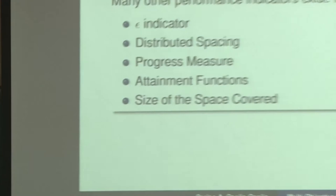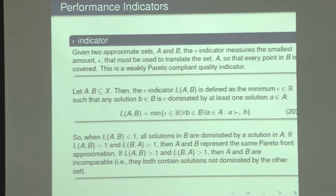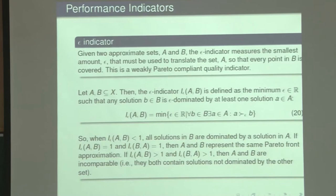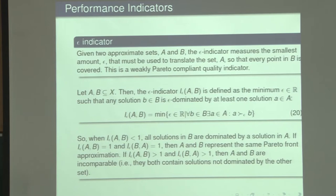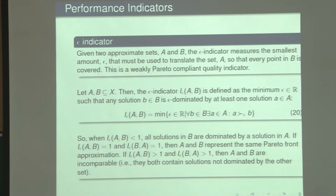The epsilon indicator measures the smallest amount epsilon that we have to translate set A so that every point in B is covered. It's weakly Pareto compliant — meaning it's a good indicator. However, it's not commonly used today; some people don't like it, probably because it's binary.